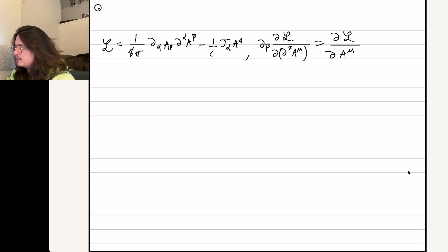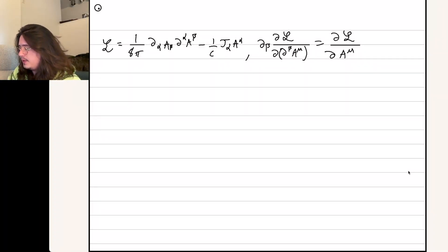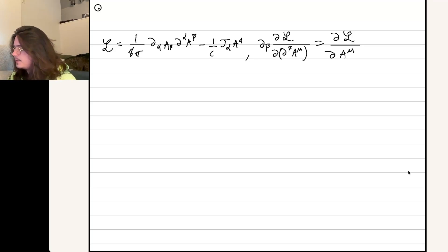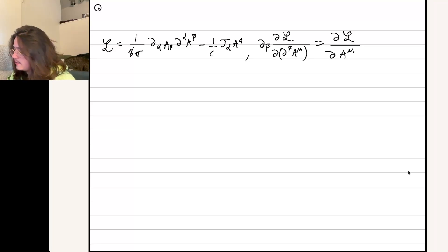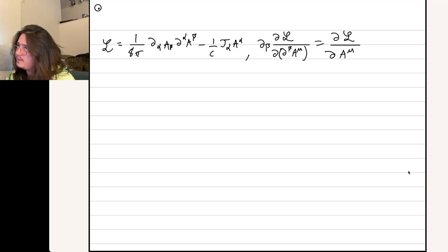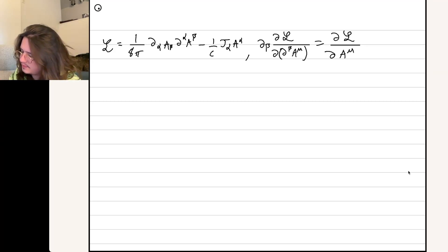Alright, here's the situation. We have this alternate Lagrange density for the electromagnetic fields, and we're going to act the field equation on it and see what happens.